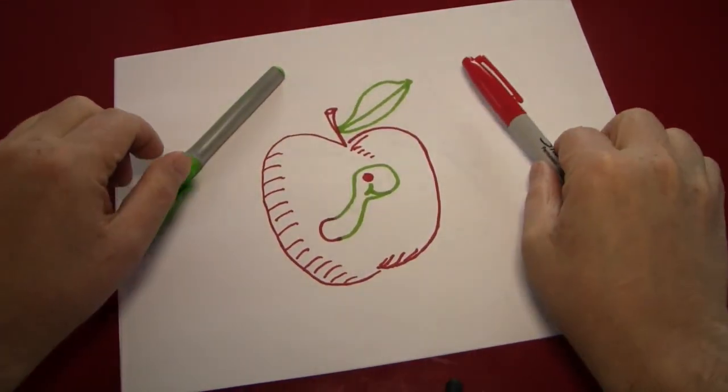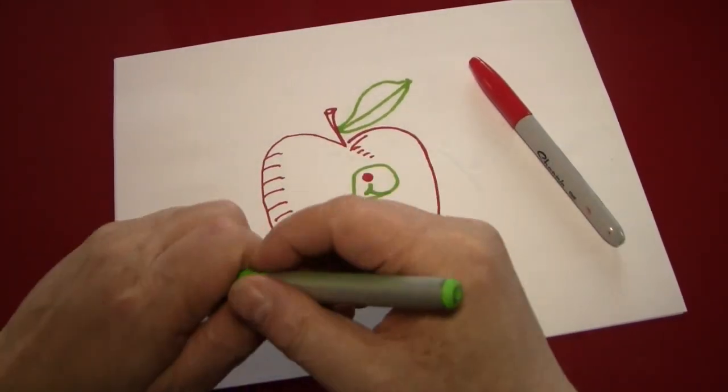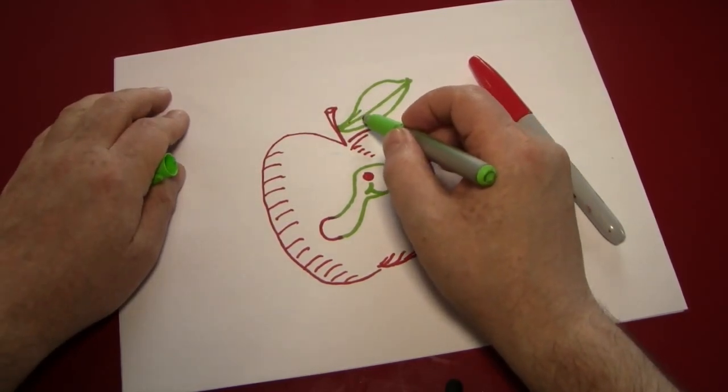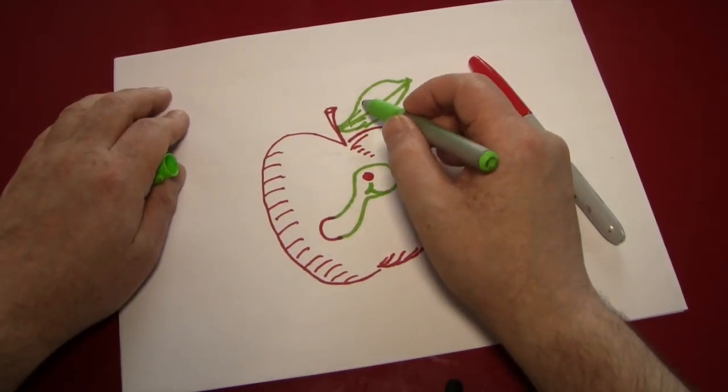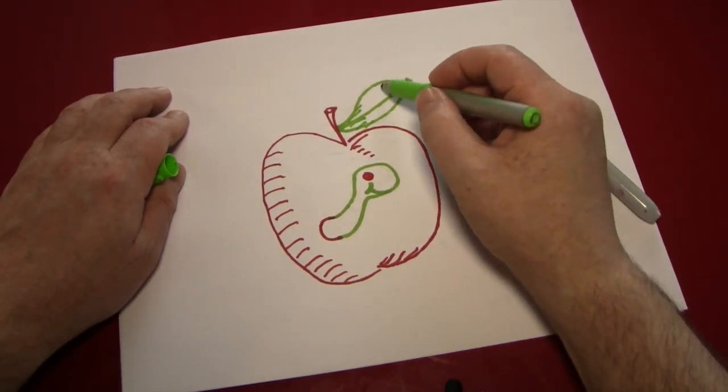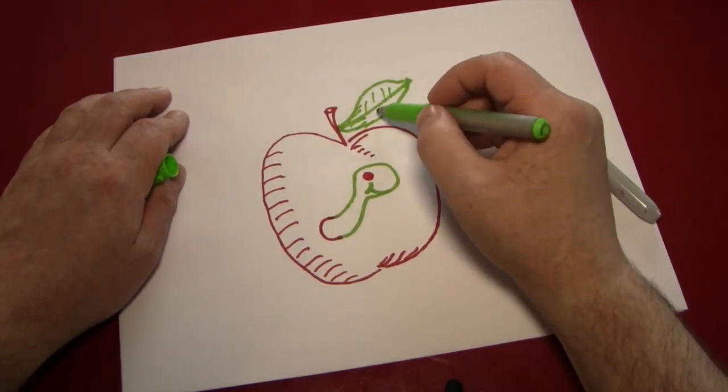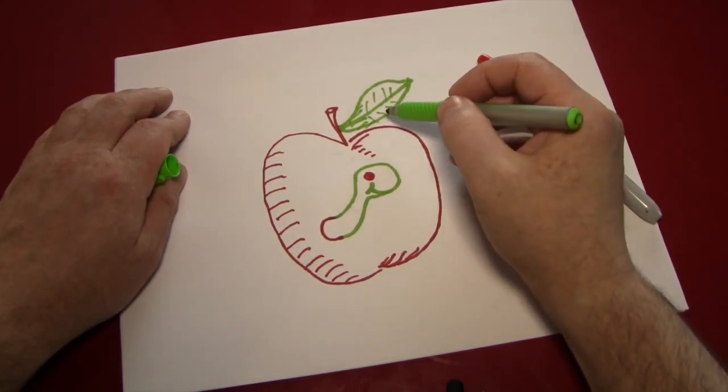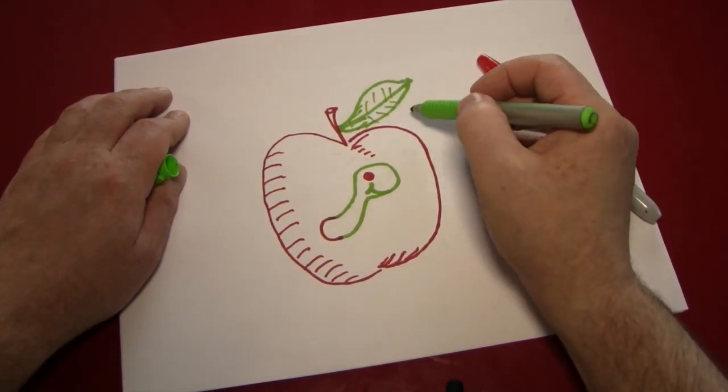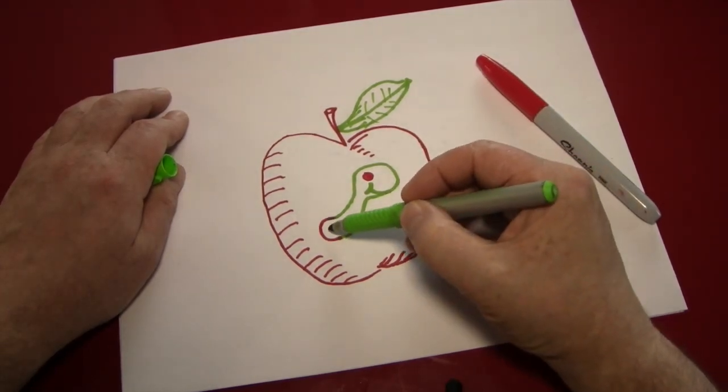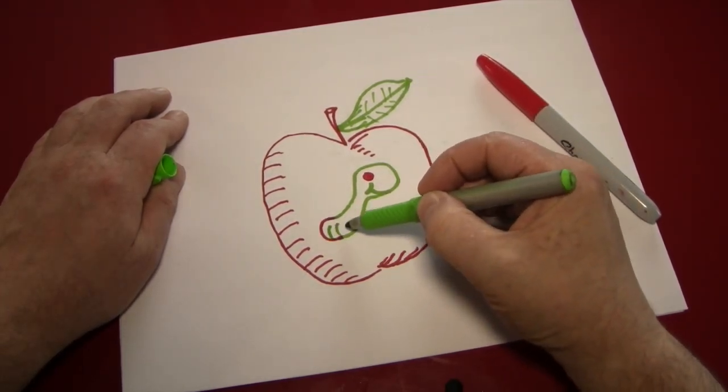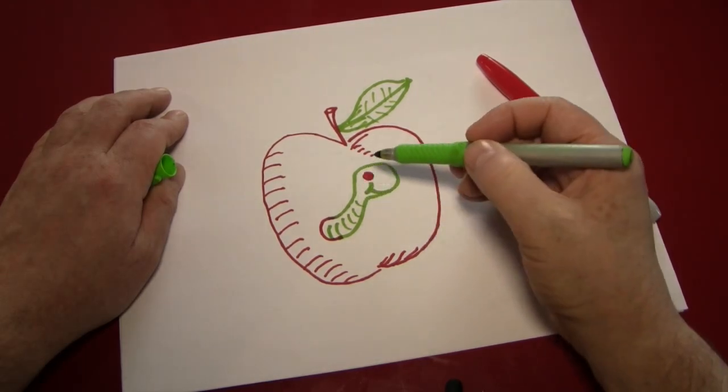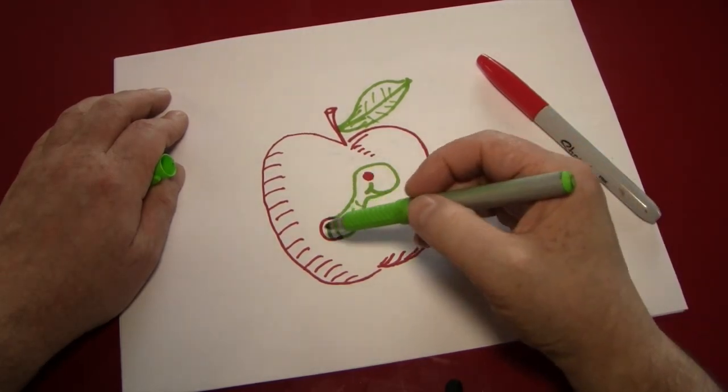Next we'll add a little bit of detailing to the leaf and the worm, a little bit of shadowing, and maybe some veins coming out of the leaf. Just little lines that branch off from the center, going away from the stem. And some rings on our friend the worm. They don't have to go all the way up to his head. They can just look like a little sweater for him.